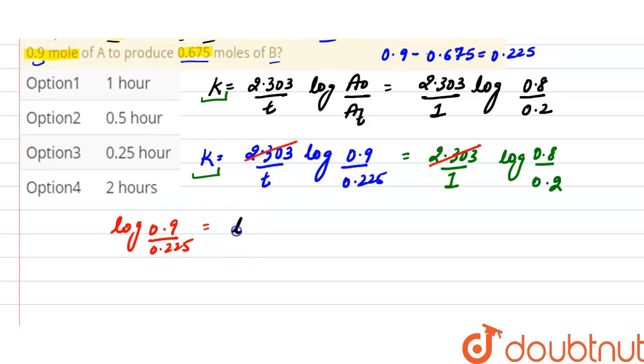We can write it as log of 900 divided by 225, and we can write it as log 4. And this log 0.8 divided by 0.2, we can write it as log 4. As both the values of logs are equal, so they'll cancel out each other.